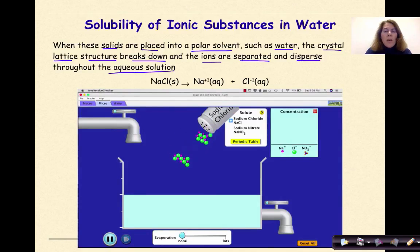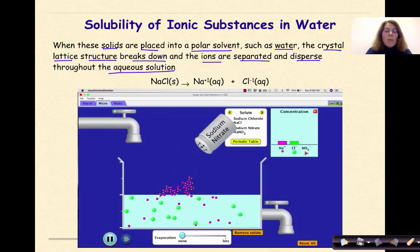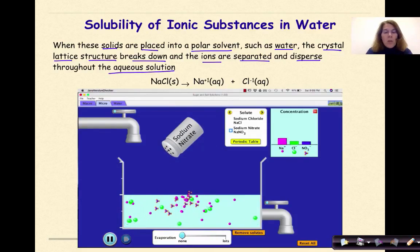Here we have our sodium chloride being shaken in. We can see it starts as a solid and then breaks down into individual ions that completely separate from each other. If we shake in sodium nitrate, we'll see something very similar, still in a one-to-one ratio, but the sodium ions will completely dissolve and be separate from the nitrate ions. The nitrate ions, of course, are not going to break down into nitrogen and oxygen because they're covalently bonded.